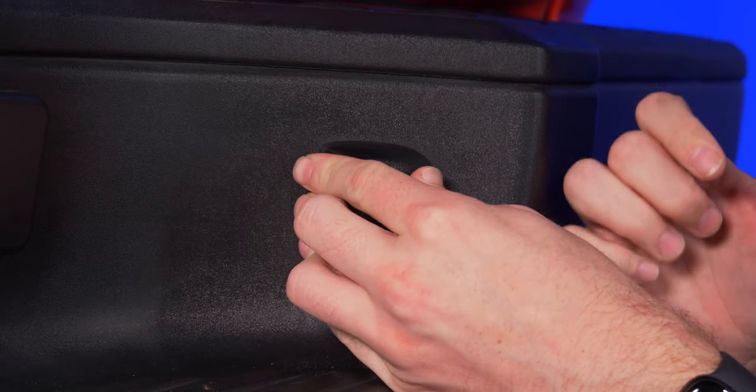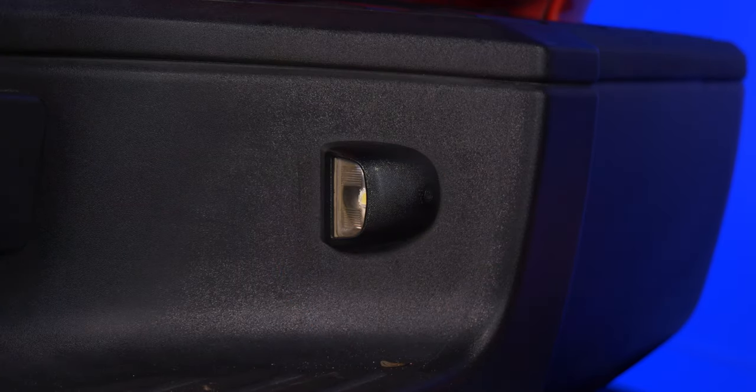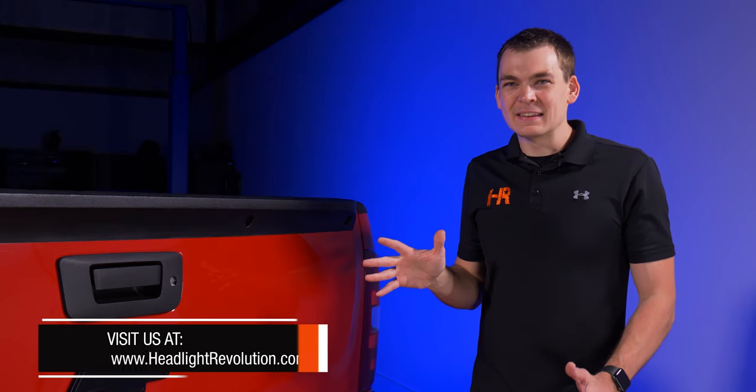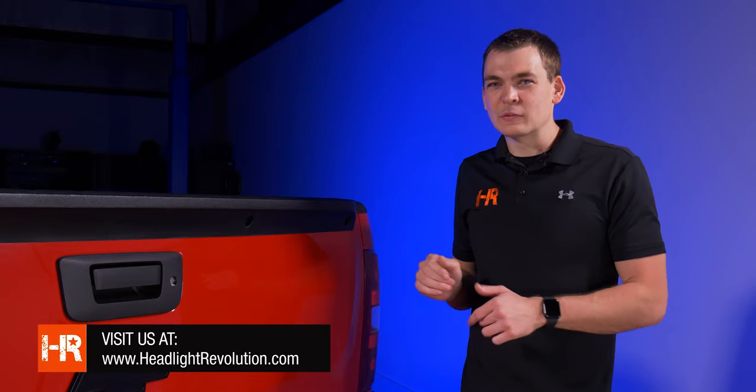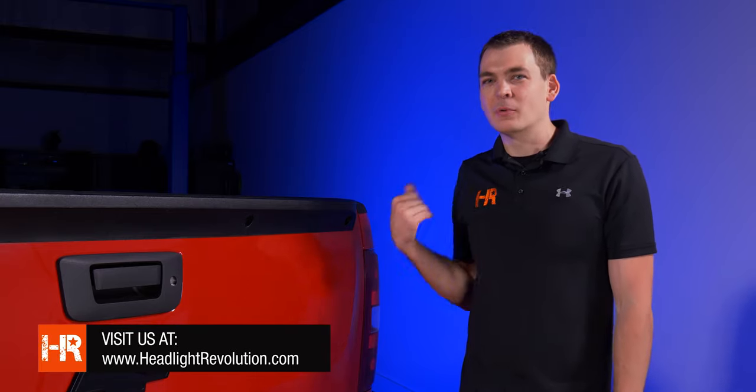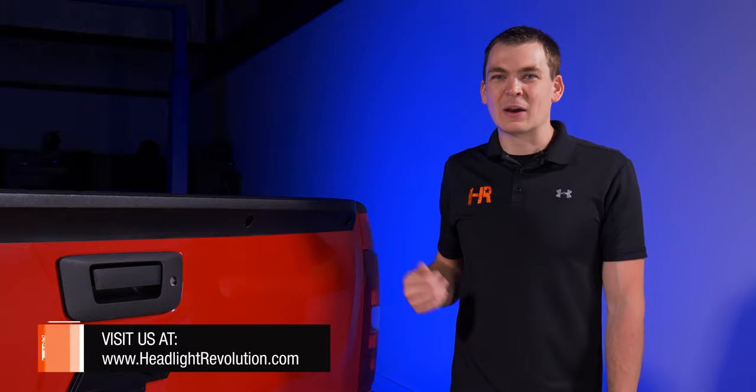Angle it back into the bumper, click it in place. Do the same thing for the driver side. Now that we've got the Xenon Depot plate light installed and the license plate lights themselves upgraded, we need to pop a tail light out to upgrade the reverse lights and also connect that wiring too.